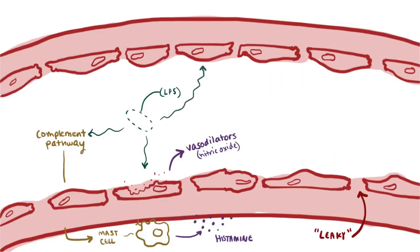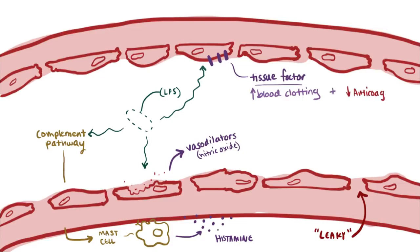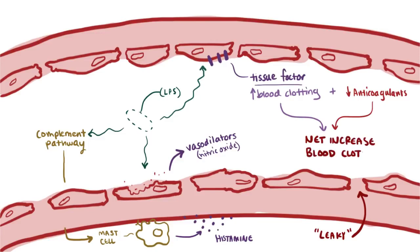Additionally, endothelial cells express a pro-coagulant called tissue factor. Pro-coagulants are molecules that increase blood coagulation, or blood clotting. This, in combination with an overall decrease in anticoagulants — which usually decrease clotting and seem to be often depleted or used up during sepsis — leads to a net increase in coagulation and clotting in the microvasculature. Clotting and blockages in the blood vessels further decrease perfusion.